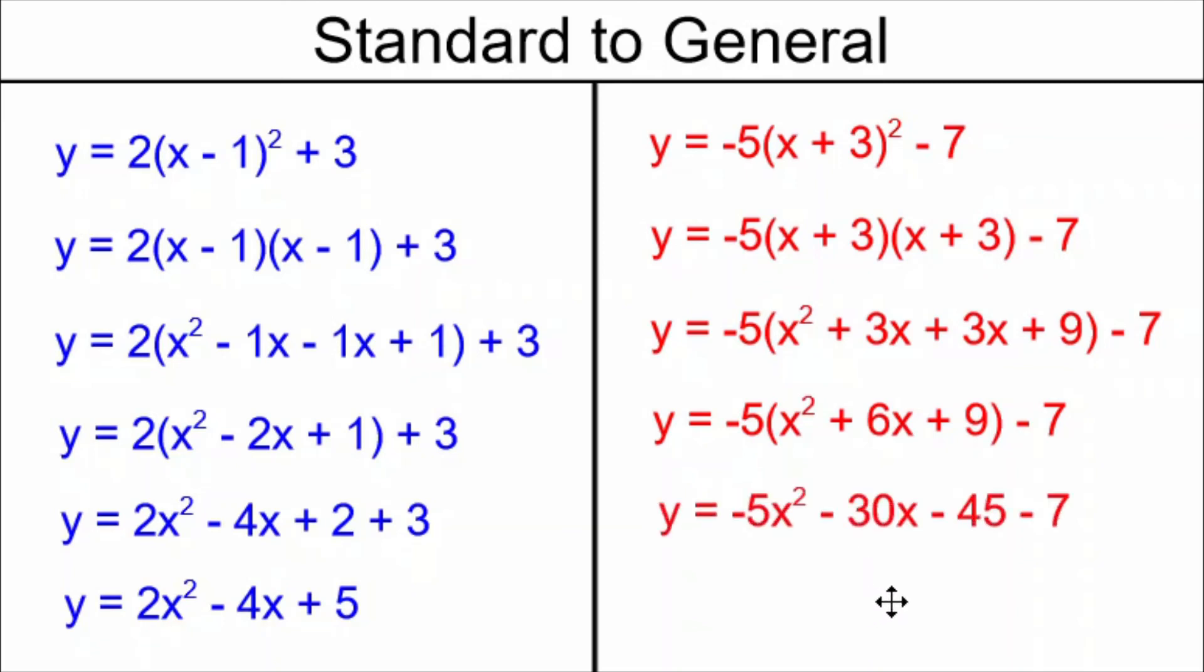I have -5x² - 30x - 45, and all along I had this -7 which I've been carrying down. Now, combining similar terms for the second and last time, I have -5x² - 30x - 52. My equation is in general form.